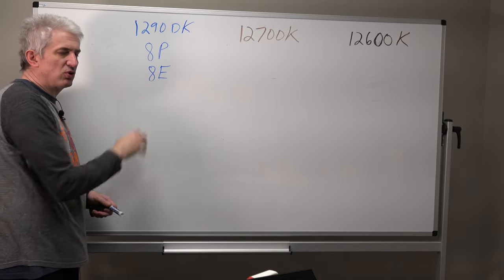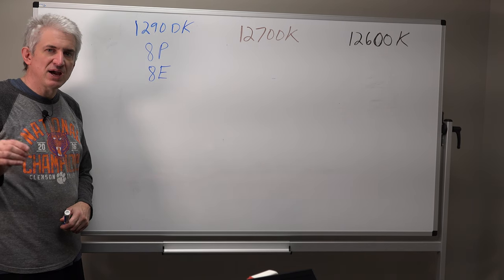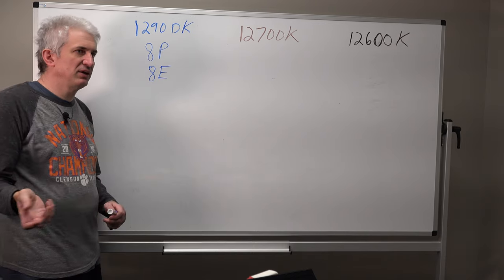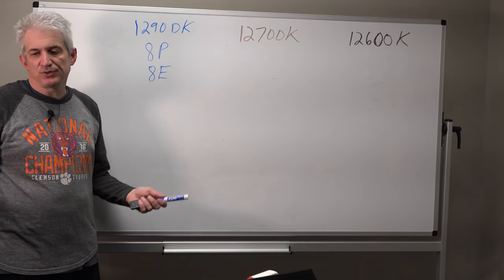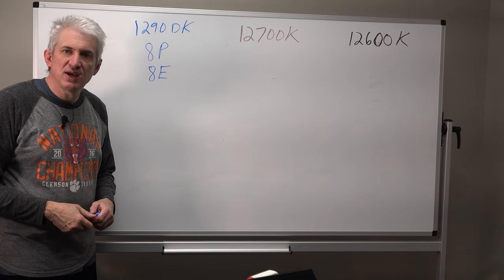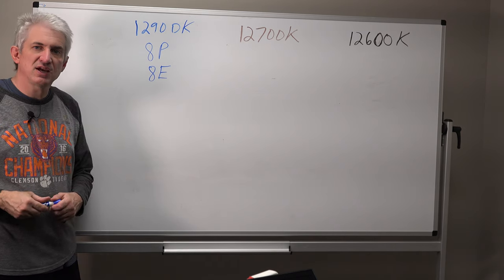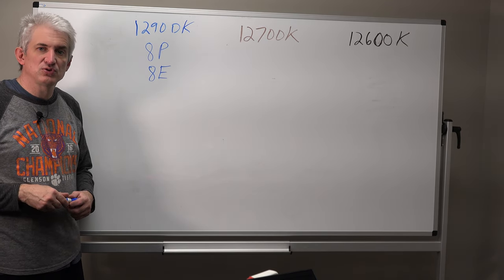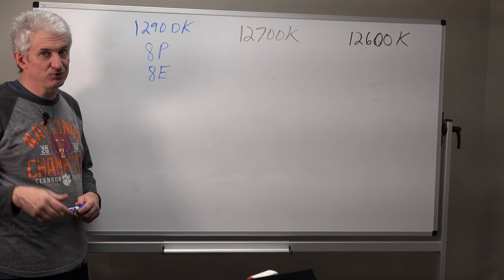And so that's why games are really going to be running on these 8 performance cores. The efficiency cores are designed for things like background Windows tasks, things like if your antivirus were to kick in, or an email comes in, or Windows decides to check for updates. The E cores can kick in and take care of those tasks.